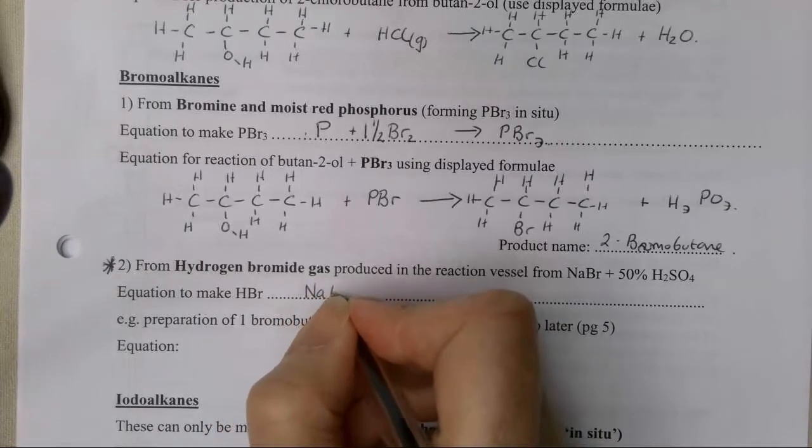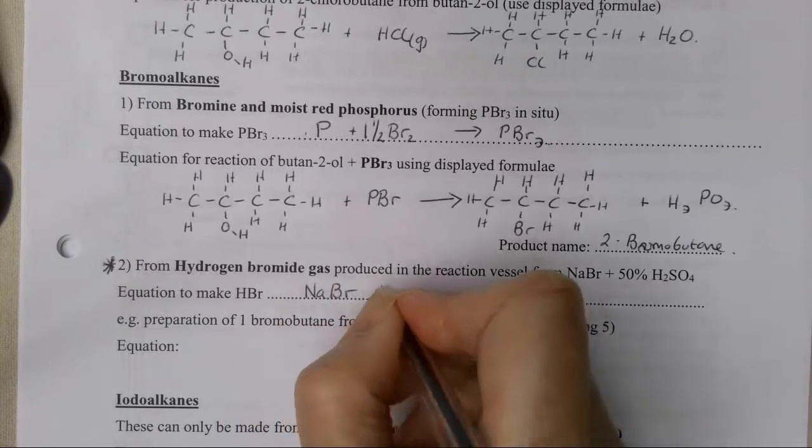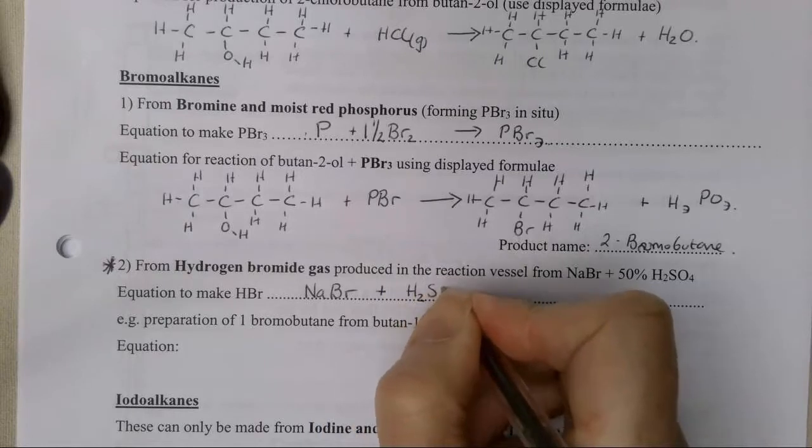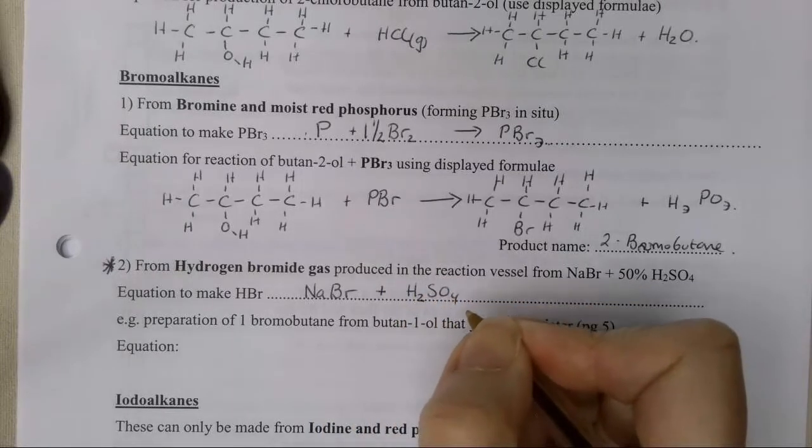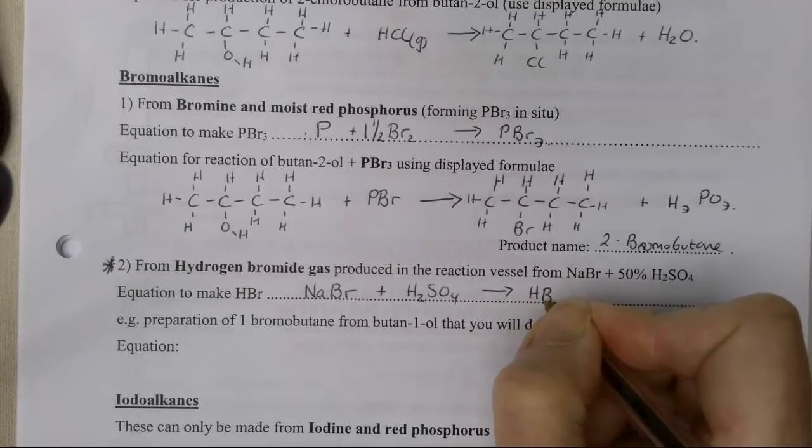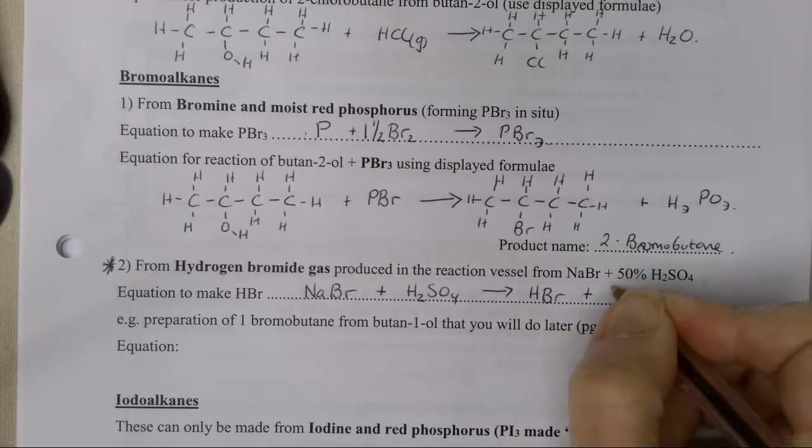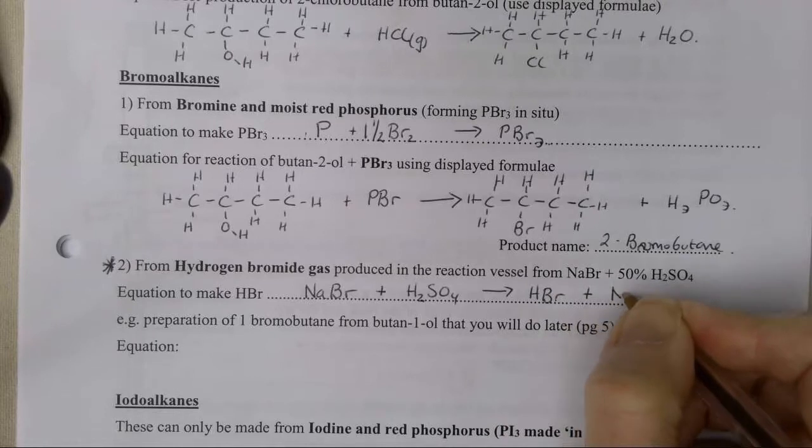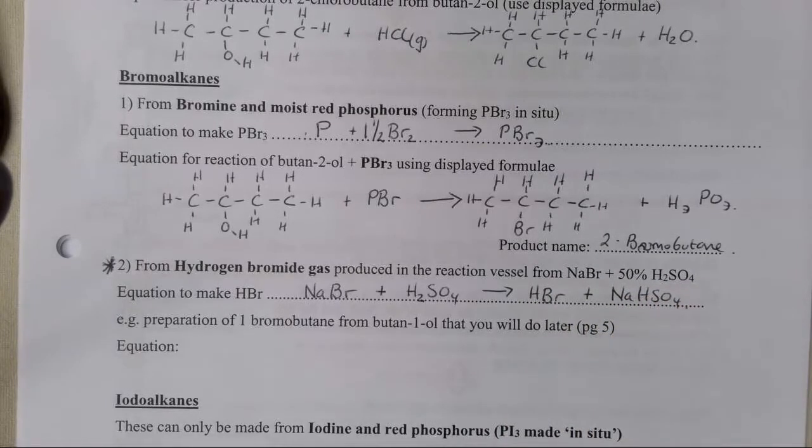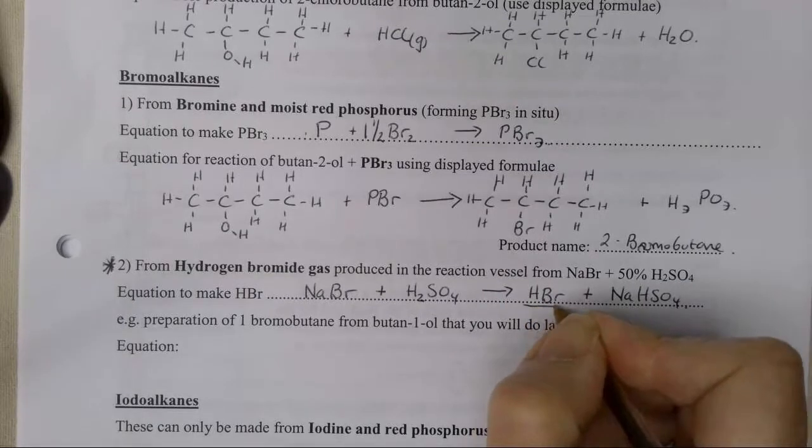The equation to make HBr: We start with sodium bromide, or we could start with potassium bromide because that's a spectator ion. We mix it with concentrated sulfuric acid. We get hydrogen bromide and we also make some NaHSO4 as our other product. This is my attacking species.